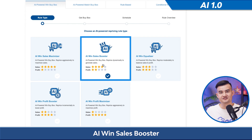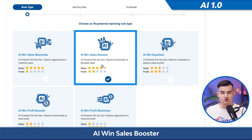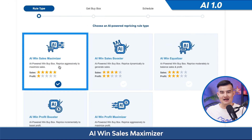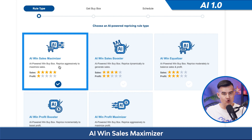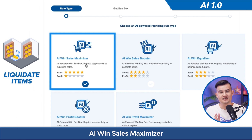Then we have AI win sales booster, which will incrementally reprice to boost sales. Then there's AI win sales maximizer, our most aggressive sales-focused rule. This will prioritize sales over profits and would also be good if you're trying to liquidate items.